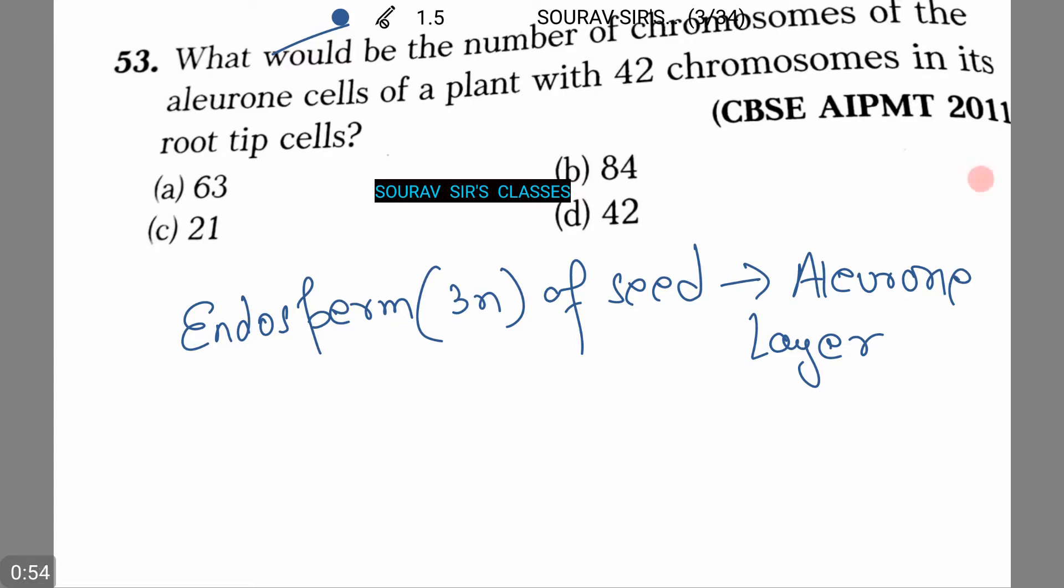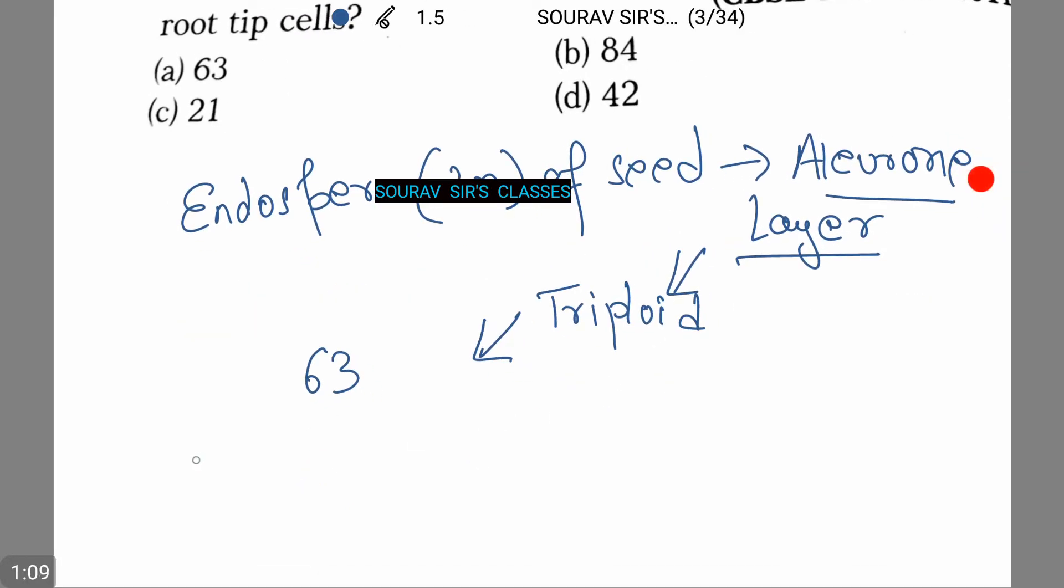Now since the cells of this aleurone layer are triploid, the number of chromosomes thus will be 63. And this is because root-tip cells which have 2N number has 42 chromosomes. Thus the answer is option number A.